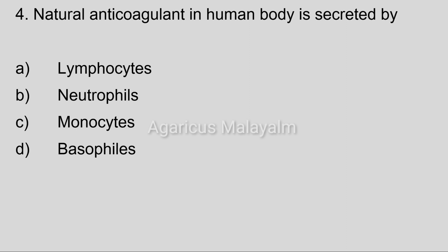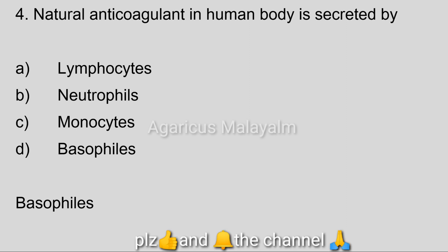Fourth question: The natural anticoagulant in the human body is secreted by? Option A: Lymphocytes. Option B: Neutrophils. Option C: Monocytes. Option D: Basophils. Correct answer: Option D, Basophils.